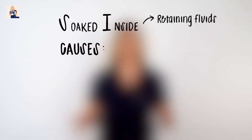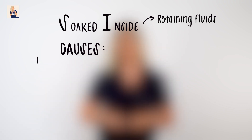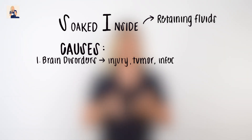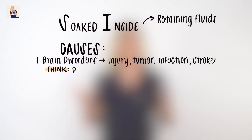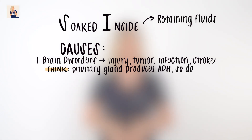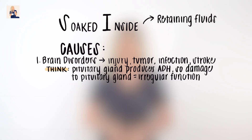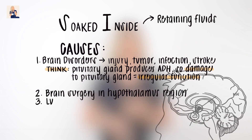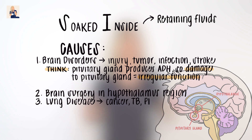Why would someone be diagnosed with SIADH? Common situations where the body releases too much ADH, or acts inappropriately, include disorders of the brain: injuries, tumors, infections, stroke. Think — the pituitary gland produces ADH, so damage to that gland will cause irregular function. Other common situations include brain injuries in the hypothalamus region, lung disease, cancer, TB, pneumonia, chronic infections, and sepsis.